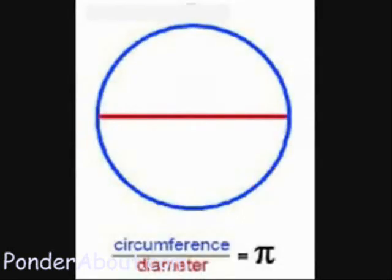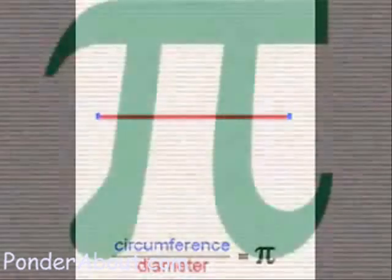You know pi is the ratio of the circumference of a circle to its diameter. So how far around a circle divided by how far across gives you pi.